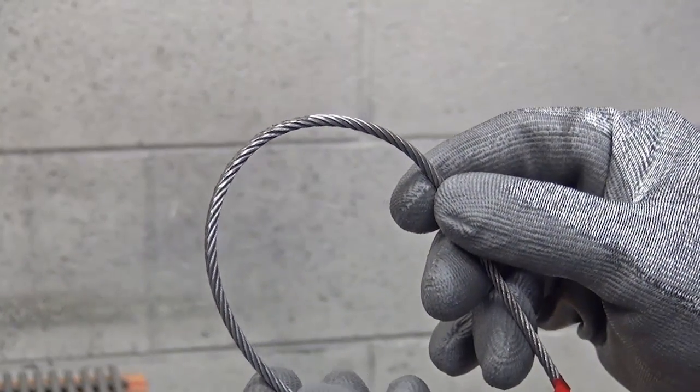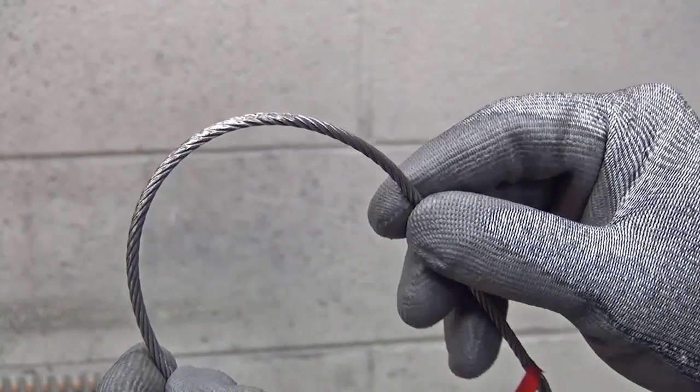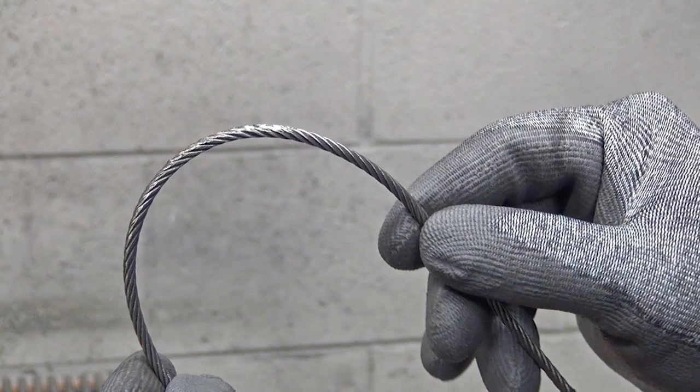Inspect cables for flat spots or areas where the cable twist is unwrapping and any condition in which the cable is distorted. There are no acceptable criteria for this type of deterioration and the cable must be replaced.